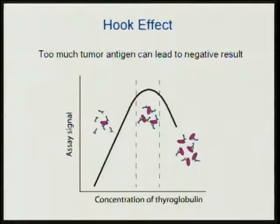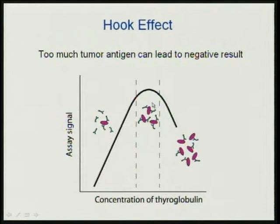The hook effect: we like to have our assays operating on the linear part of the curve, so that as we make more sandwiches we get more signal. But there's a point at which you've made all the sandwiches you can make. As I continue to add thyroglobulin into the system, I can actually saturate both the capture antibody and the reporter antibody, make no more sandwiches, and lose our signal. So it's possible in a patient with lots of thyroglobulin to get a perfectly negative assay. Some laboratories take great care — our immunology laboratory is one of the pioneers in trying to come up with ways to prevent the hook effect from affecting patient care.